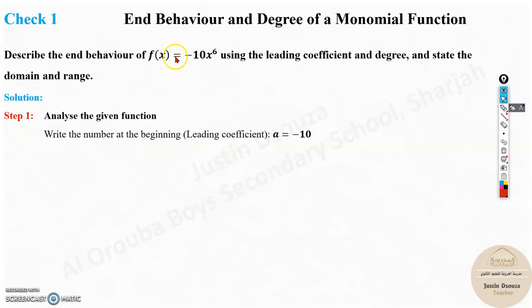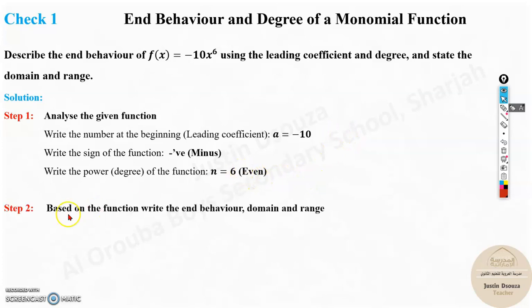Over here you can see the power is even. Let's write, what is the leading coefficient? It is -10. The sign is negative. The power is 6. That is even number: 2, 4, 6, 8, 10. All these are even numbers. Now, based on this function, you can write the end behavior, domain, and range. But before that, let us sketch the rough figure of the graph. This is a rough graph, not the exact measures.